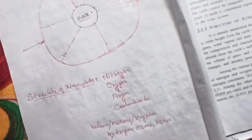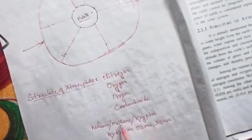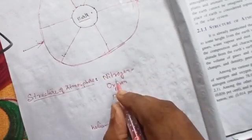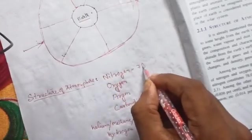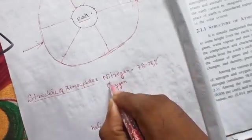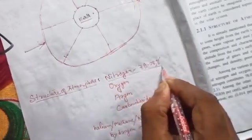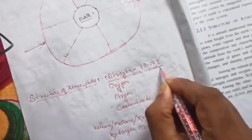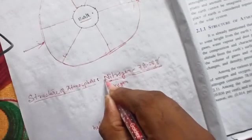In atmosphere, you will find 78.08% of nitrogen. So this is a huge number. You can say the atmosphere is made up of nitrogen. Next, oxygen - you will find 20.94% of oxygen.